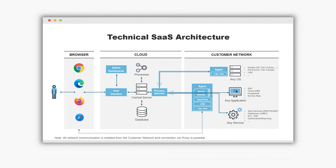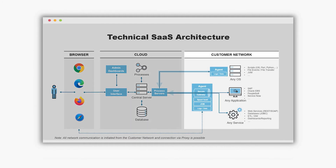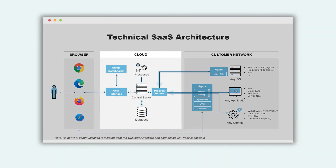The Run My Jobs service is a two-tier architecture with a cloud tier and a customer network tier. The cloud tier primarily consists of two main components. The first component is a central server, whose main function is to perform the workload orchestration. The second component is the relational database, which is used to store the metadata on the processes that is relevant for the automation itself and what it is you actually want to execute.